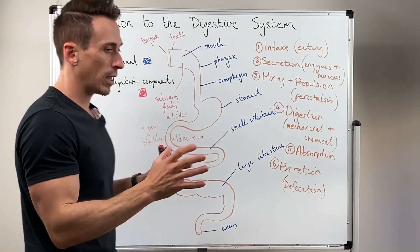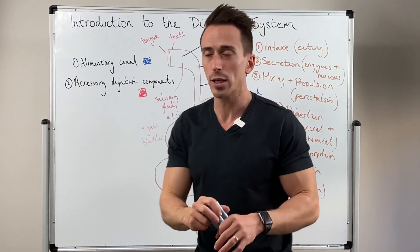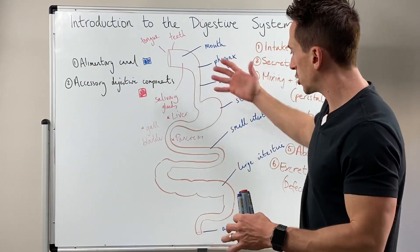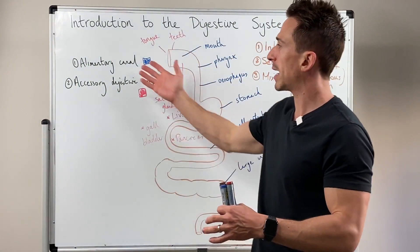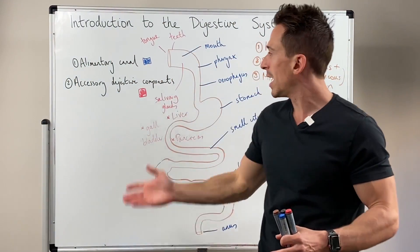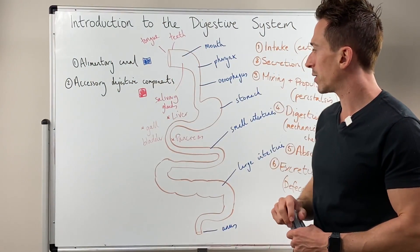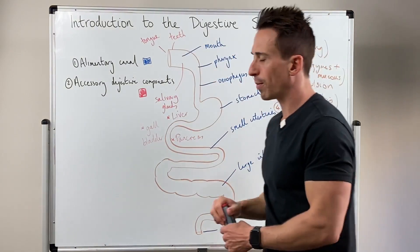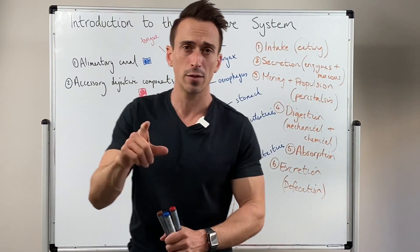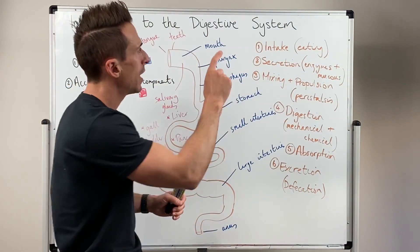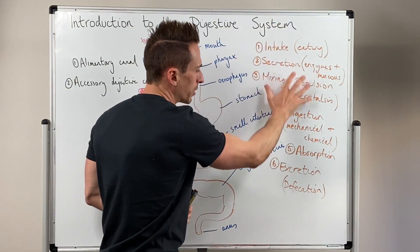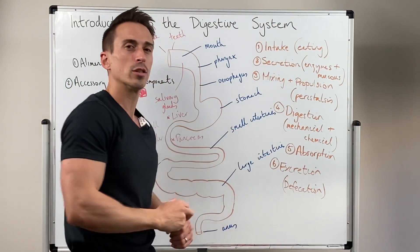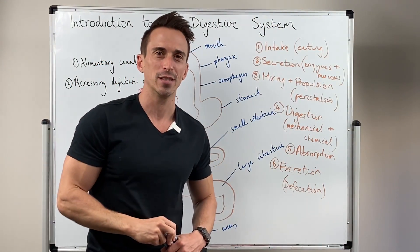So what we've gone through here is we've broken the digestive system into the alimentary canal and the accessory structures. We'll be talking more about this in detail in future videos, covering all the different functions of the digestive system.